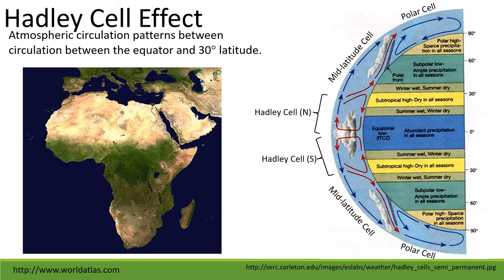We know biomes occur across the globe because of precipitation and temperature, but what affects those patterns? One important concept is the Hadley cell. Precipitation is abundant right along the equator — that's where we have tropical rainforests. After that moisture falls, the air moves up, cool air forms at higher altitudes, then it falls back down to earth. It picks up moisture moving toward the equator, drops its moisture, and then that warm air moves up again, cools, and drops down around 30 degrees latitude. So we have lots of moisture at the equator and dry conditions around 30-degree latitudes.